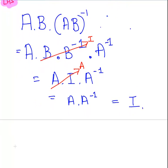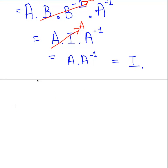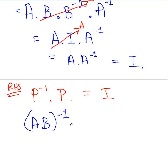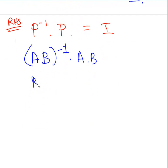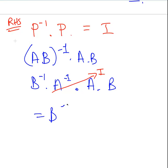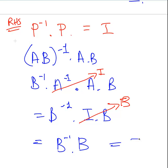Now we do something very similar for the right-hand side. We use the identity P to the minus 1 times P equals the identity matrix. So B to the minus 1 times A to the minus 1 times A times B should equal the identity matrix. A to the minus 1 times A cancels to the identity matrix, leaving B to the minus 1 times the identity matrix times B. That simplifies to B to the minus 1 times B, which is also the identity matrix.